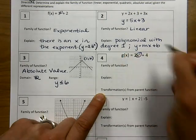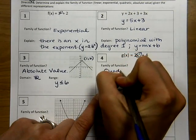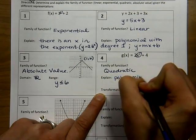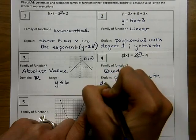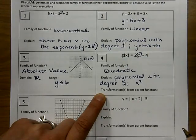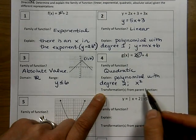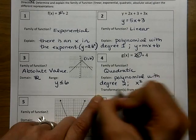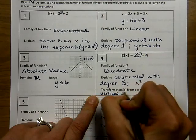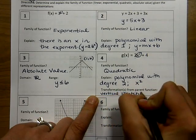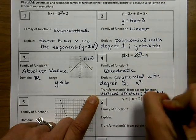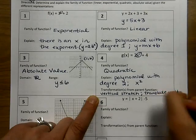Because I see an x squared, I know that this is quadratic — it is a polynomial with degree 2. The transformations of this function from the parent function: because this is in vertex form where a is 2, I know that is a vertical stretch, meaning it is narrower than the parent function. And because k is 4, I know that this is translated up 4 units.